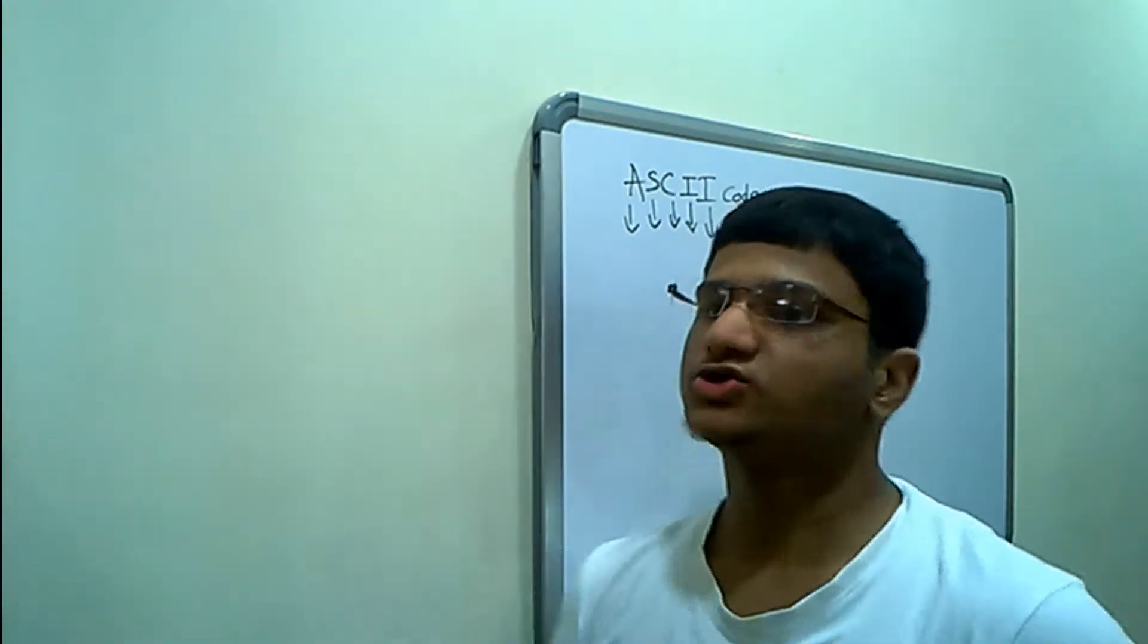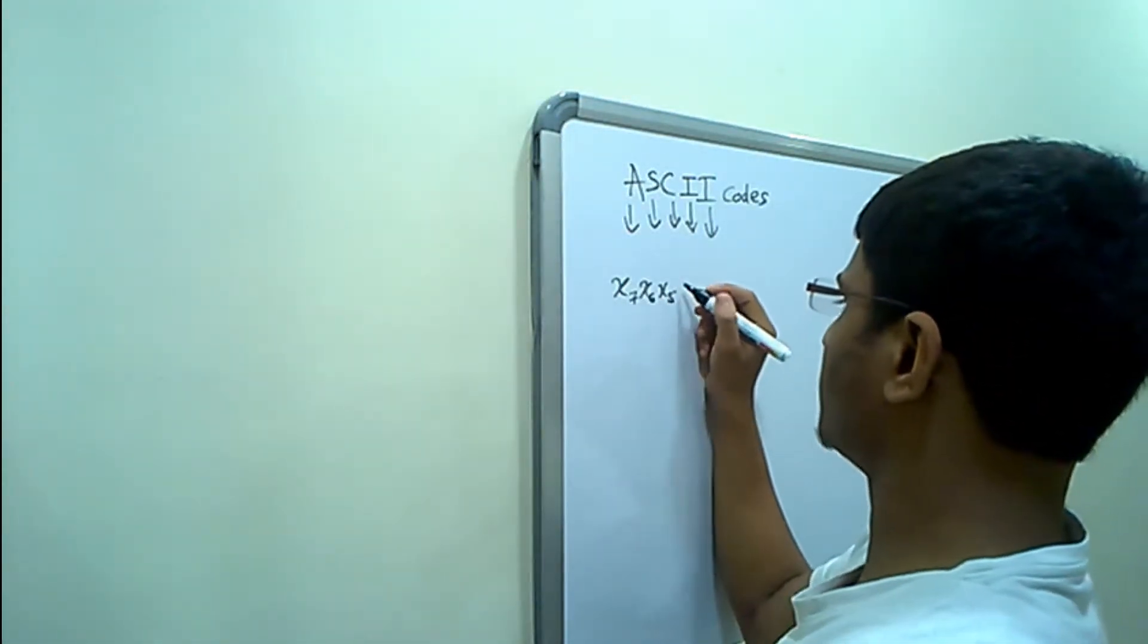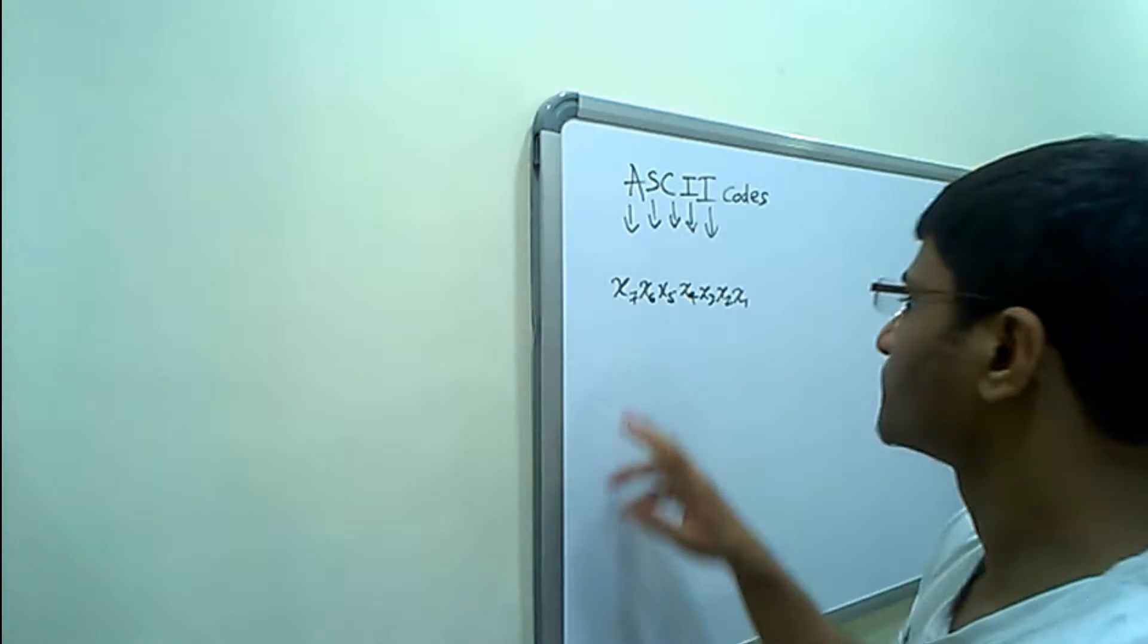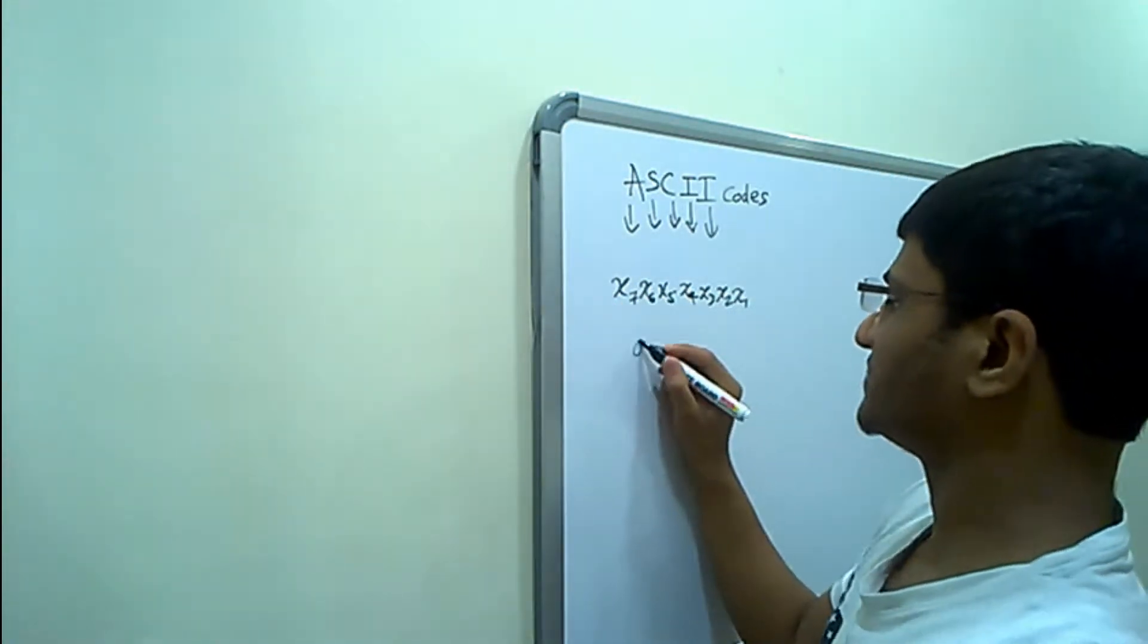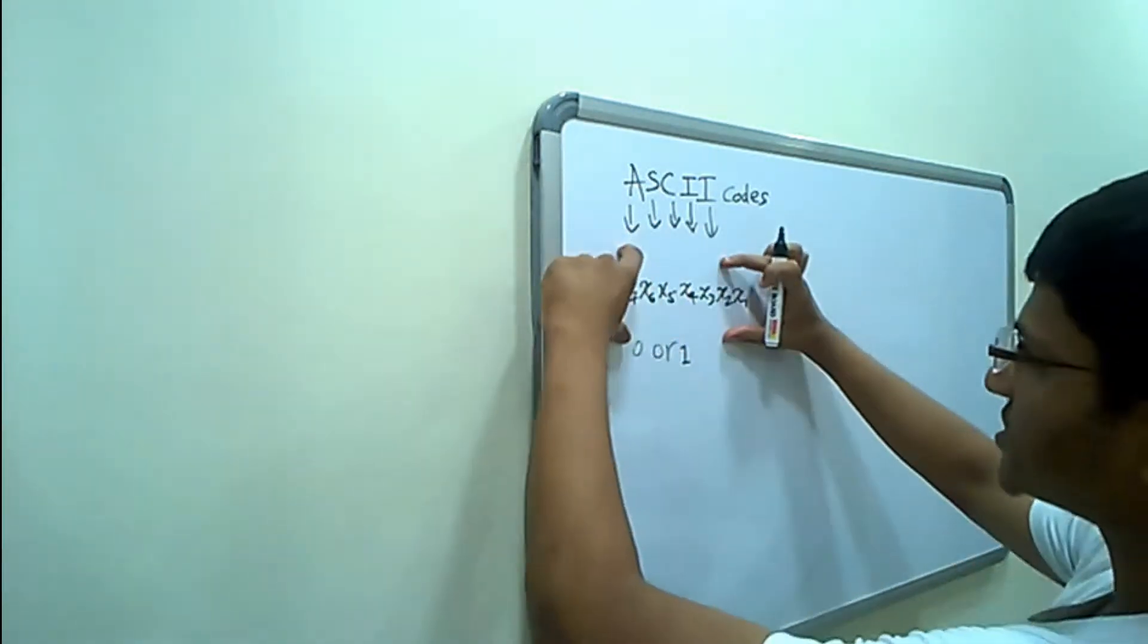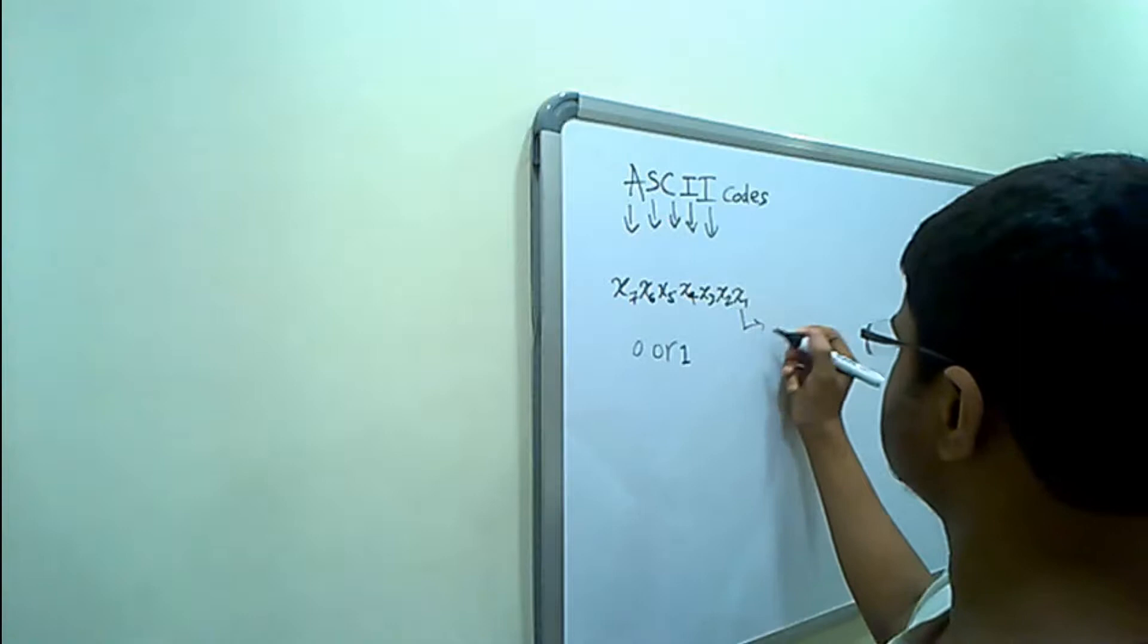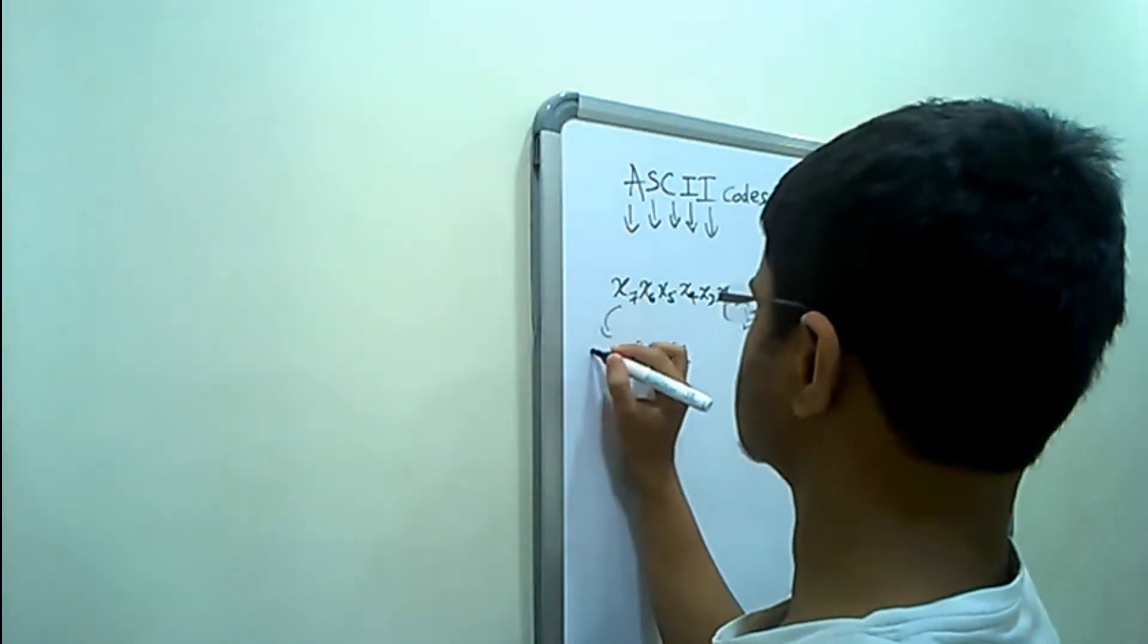The format is x7, x6, x5, x4, x3, x2, x1, where each x represents a bit, a binary bit - that's zero or one. The combination of the seven zeros and ones make a code with a standardized output, where this is the least significant bit and this is the most significant bit.